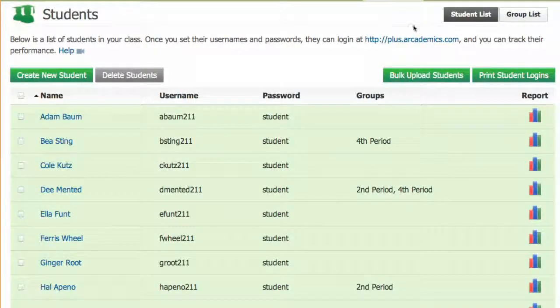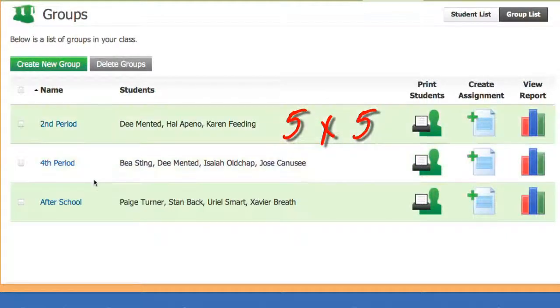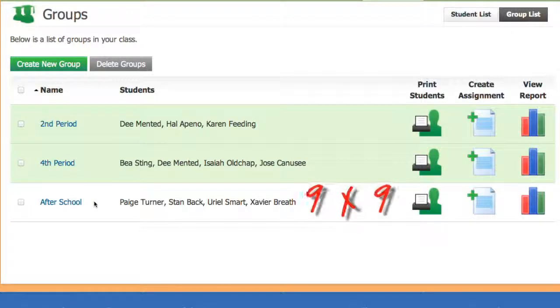Once your students are enrolled, you can put them into groups. You can assign these groups differentiated games. For example, you can have a group for your main class who are working on their multiplication table of fives and another group for your after-school class who are working on their nines.